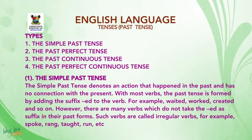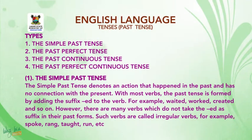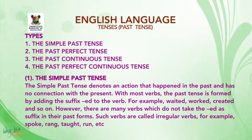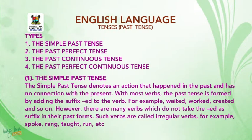There are four types of Past Tenses: 1. The Simple Past Tense, 2. The Past Perfect Tense, 3. The Past Continuous Tense, 4. The Past Perfect Continuous Tense. The Simple Past Tense denotes an action that happened in the past and has no connection with the present.